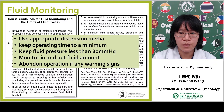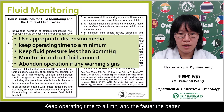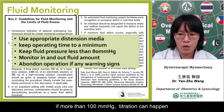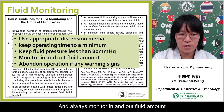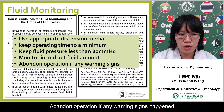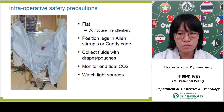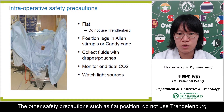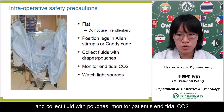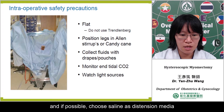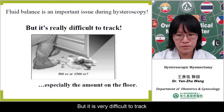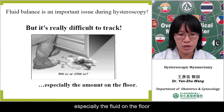The best choice is saline solution. Keep operating time to a minimum — the faster the better. Keep fluid pressure less than 80 mmHg; if more than 100, extravasation can happen. Always monitor in and out fluid amounts. Abandon the operation if any warning signs occur. Other safety precautions: use a flat position, do not use Trendelenburg. Collect fluid with pouches and monitor the patient's end-tidal carbon dioxide. If possible, choose saline as distension media. Fluid balance is the most important issue during hysteroscopy, but it is very difficult to check, especially fluid on the floor.